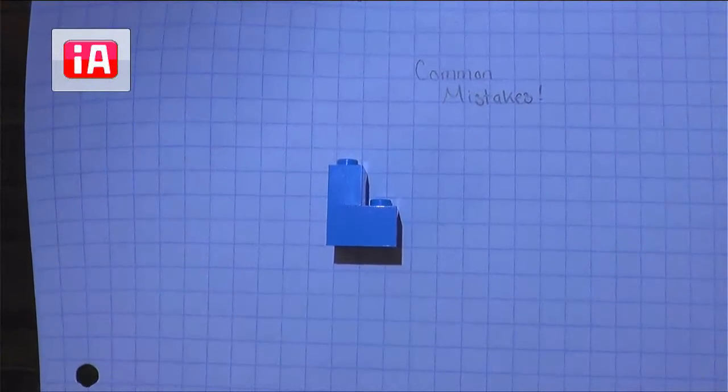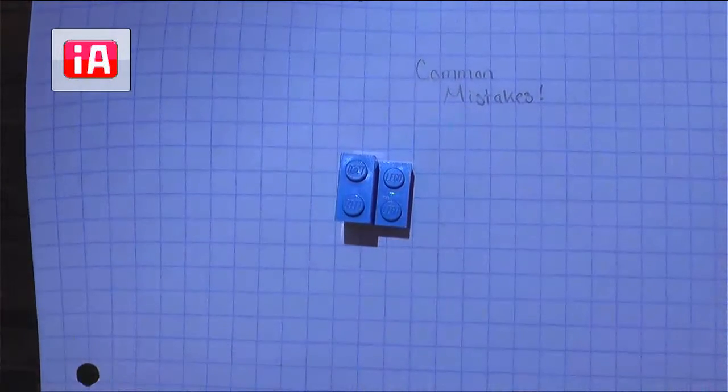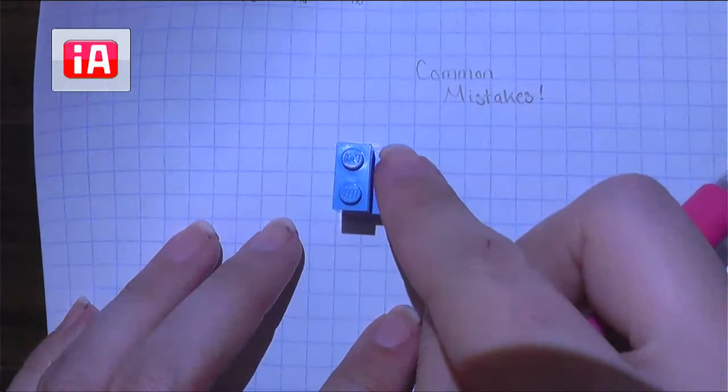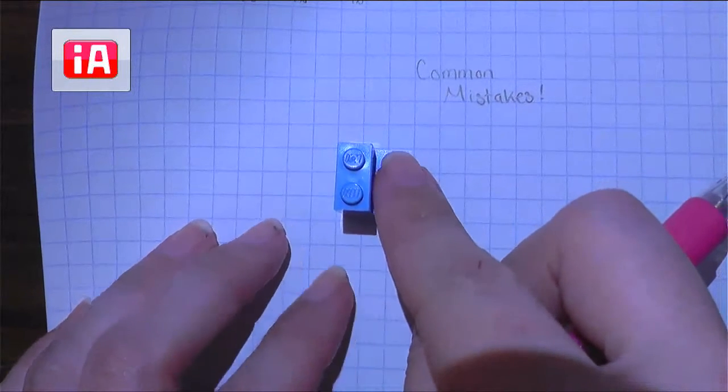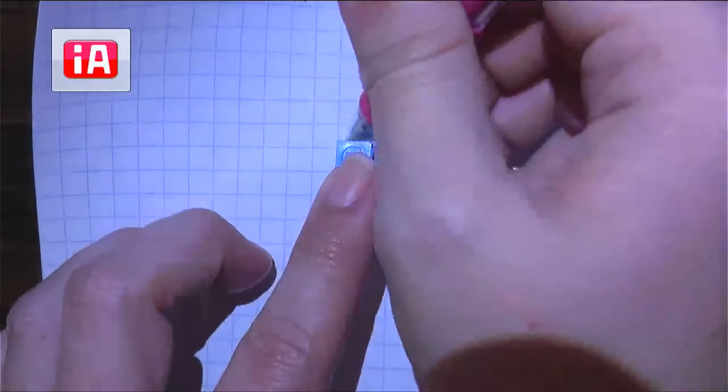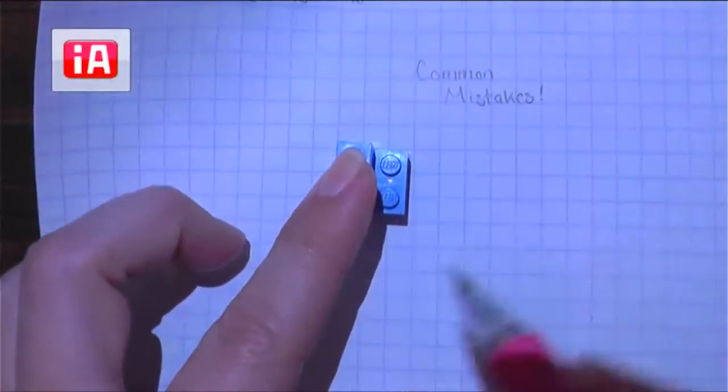The first mistake that we see is we tend to see drawings that are kind of floating on your graph paper. So we really commonly see that floating when students just trace their object instead of actually measuring it.